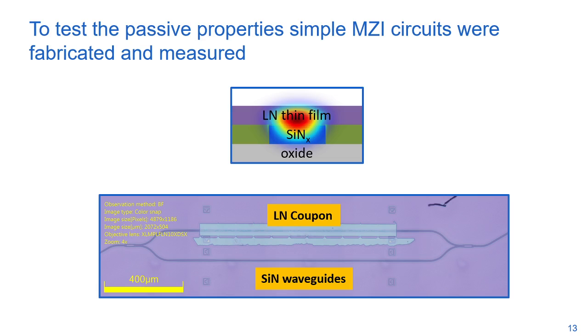To test the passive properties, simple Mach-Zehnder interferometer structures were fabricated consisting of two multimode interference structures that act as 3dB splitters. A one millimeter coupon is printed onto one interferometer arm. In the resulting structure, light is confined by silicon nitride but a large portion is located within the lithium niobate layer, creating an unbalanced Mach-Zehnder interferometer.